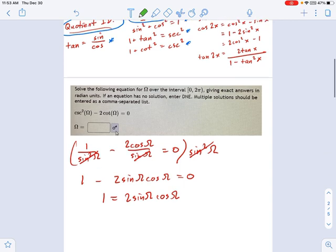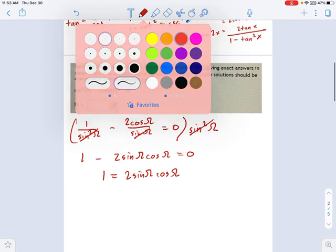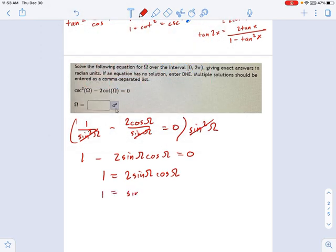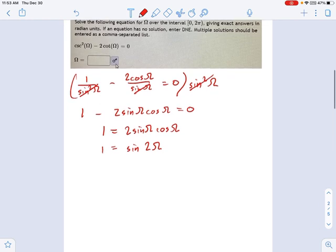Okay, so we just plug that in here, and we get this, one equals sine of two omega. And we can solve that using the multi-angle techniques we've talked about earlier.